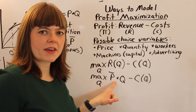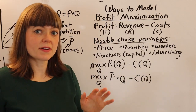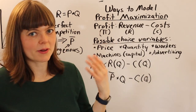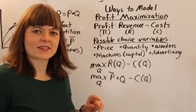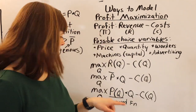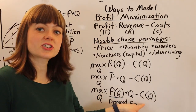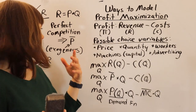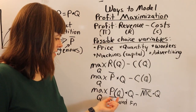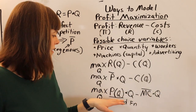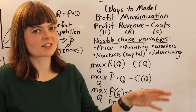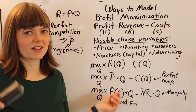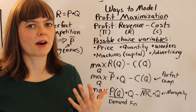What if price is not exogenous? If the quantity we produce determines the market price, that sounds like a monopoly model. In perfect competition, price is exogenous. In a monopoly model, price is determined by quantity through the demand function — the firm has market power and can put out however much it wants, which determines the market price. Those are three variations on the profit maximization model.